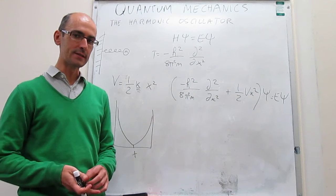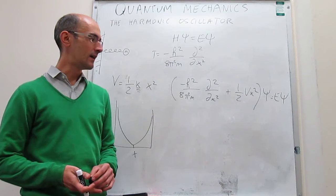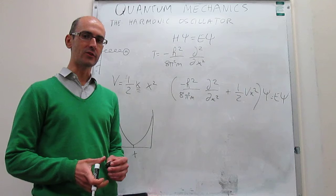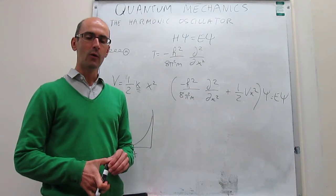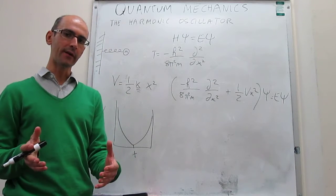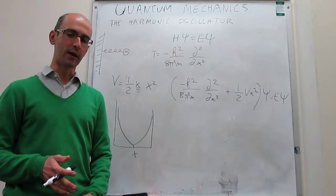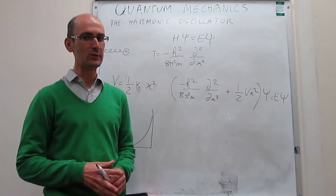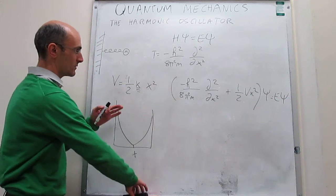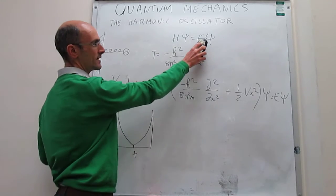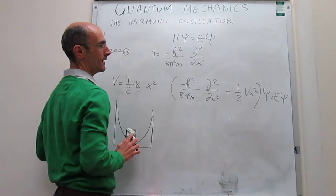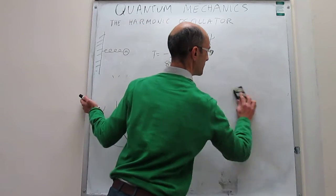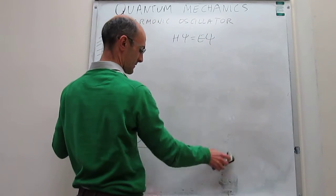In this video, we are not going to solve this equation explicitly. Instead, we are going to look at the solutions and see if we can interpret them and learn from them. We will pay particular attention to comparing and contrasting what we get for the harmonic oscillator with what we obtained in a prior video for the particle in a 1D box. The solution gives us the energy and the wave function of the system.